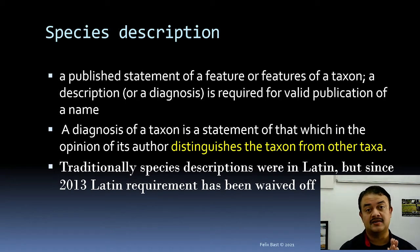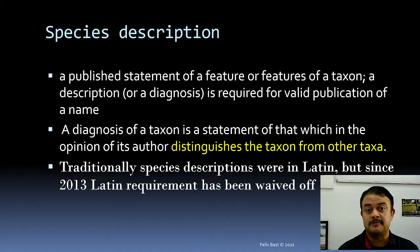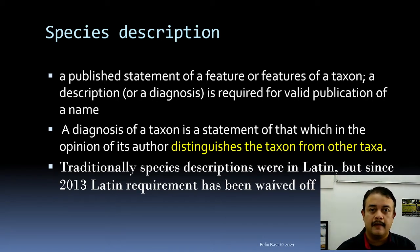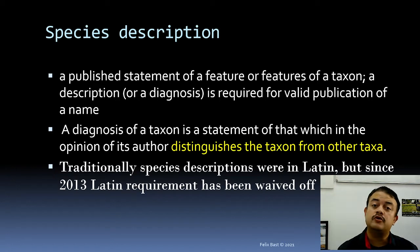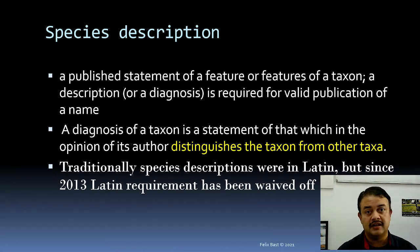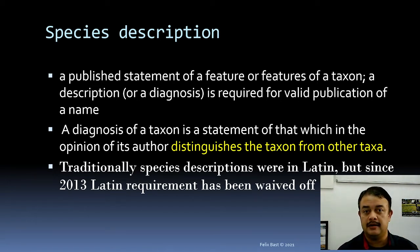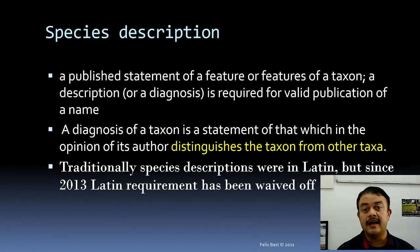Species description is a formal way to formalize the discovery of a new species. You describe all the peculiarities of a species and how it differs from closely related species — it is a published statement of the features of a taxon. A diagnosis is also required for valid publication of the name. Diagnosis refers to the unique attributes of the taxon in comparison with other closely related species.